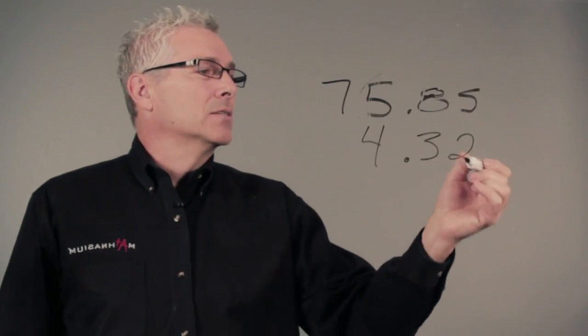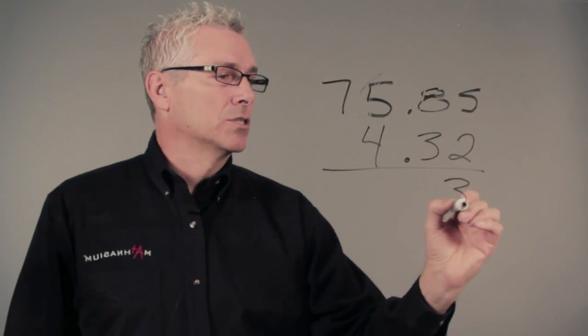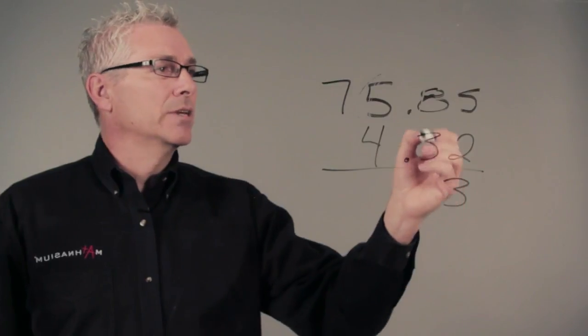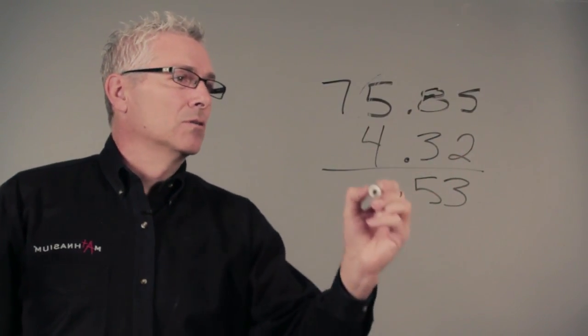Now I can subtract one hundredths from one hundredths, two one hundredths from five one hundredths, which is three one hundredths. I can subtract three tenths from eight tenths, which is five tenths. My decimals are lining up.